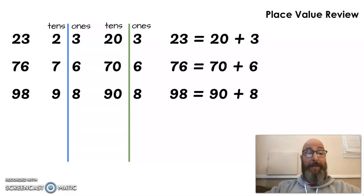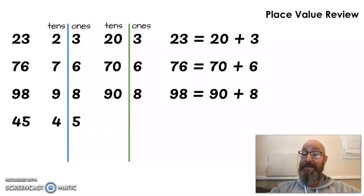Let's do one more and then we'll be done for the day. 45. If I draw a line between 45, how many tens? How many ones? Did you say 4 tens and 5 ones? If you did, you were right. And 4 tens is worth how much? 10, 20, 30, 40. And 5 ones, of course, is worth 5. So we know that 45 equals 40 plus 5.